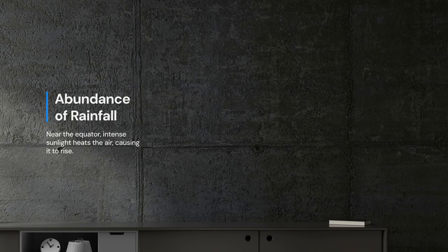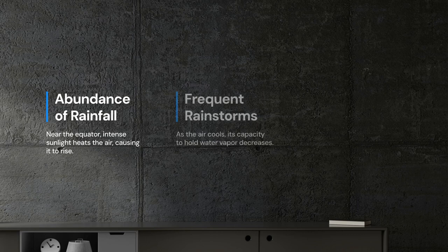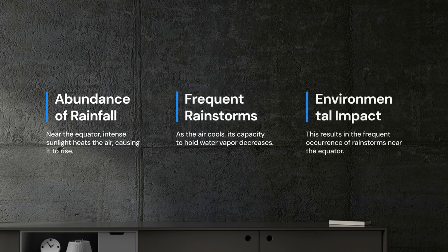Near the equator we see an abundance of rainfall. This is because the intense sunlight heats the air, causing it to rise and cool. As a result, the capacity to hold water vapour decreases, leading to frequent rainstorms.